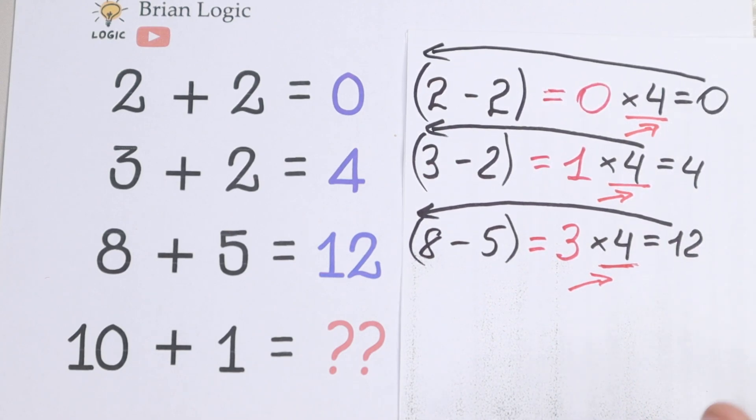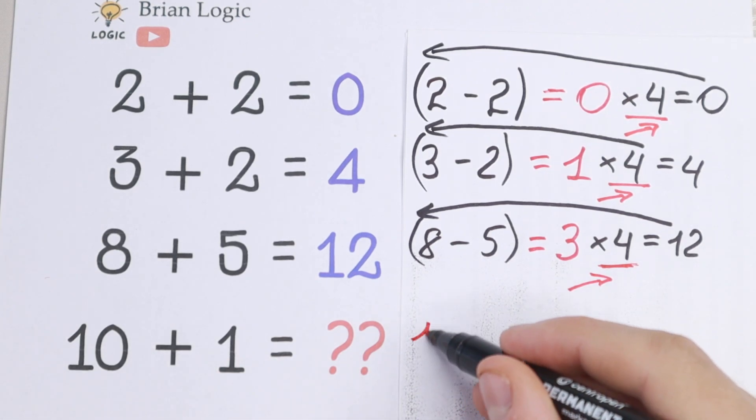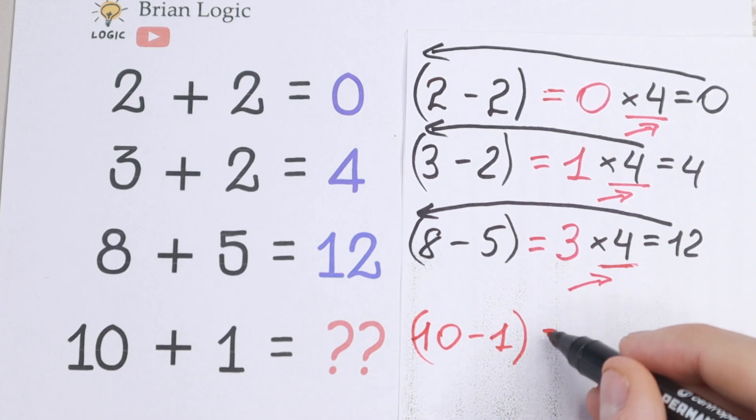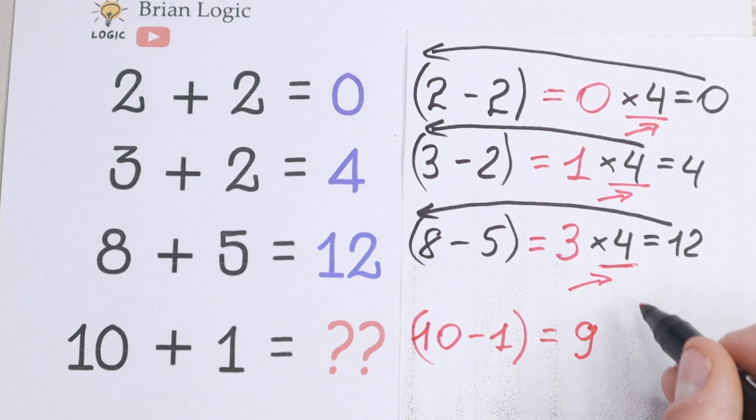So let's use the same logic, let's find the last row. What we will have? We will need to subtract 10 minus 1. We will have 9. And multiply it by 4. Because we multiply it every time, multiply it by 4. So as a result, if you can see,